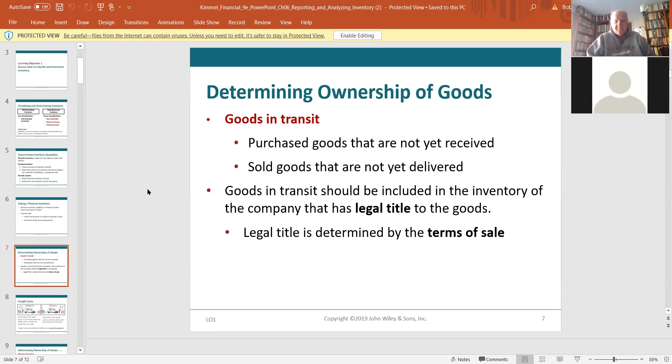Goods in transit. Purchase goods that are not yet received. I ordered some machine parts from your factory in Santa Barbara, Libra, and you put them on a truck to New Jersey. While that truck is going across the country, that's called goods in transit. Goods in transit should be included in the inventory of the company that has legal title. And legal title is determined by terms of sale.